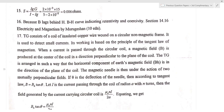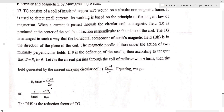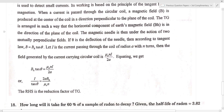The TG is arranged so that the horizontal component of the earth's field is in the plane of the coil. The magnetic needle is under the action of two mutually perpendicular fields. If theta is the deflection, then by tangent law: B equal to BH tan theta. For a coil of radius A with N turns, the field is mu0 NI by 2A. Equating: BH tan theta equal to mu0 NI by 2A, giving I by tan theta equal to 2A BH by mu0 N. This ratio is the reduction factor of TG.